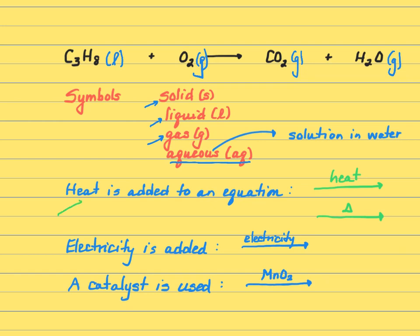We also want to indicate if heat is added to an equation. Burning means heating and oxygen. So you can write that either with heat over an arrow or a little delta sign, which looks like a triangle. So we're going to add heat to this. We'll also see reactions where we add electricity. You just write electricity over the arrow, or we use a catalyst. A catalyst is something that speeds up a reaction, and we write that over the arrow.